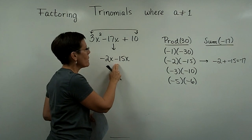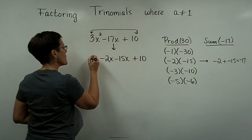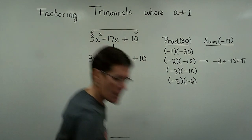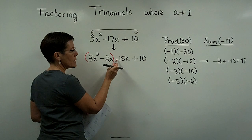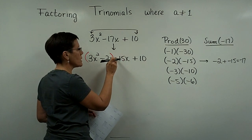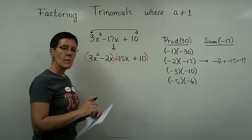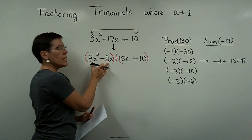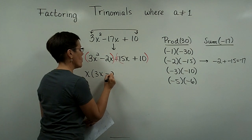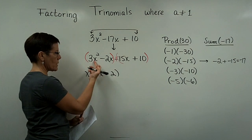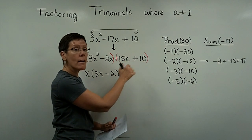Right here I can replace the minus 17x with either a minus 2x and a minus 15x or I could write it as a minus 15x minus 2x. Then I'll bring down this 10 and I'll bring down this 3x squared and I will go ahead and group the first two. I'm going to factor out a greatest common factor of x.